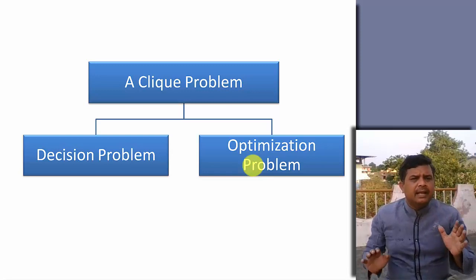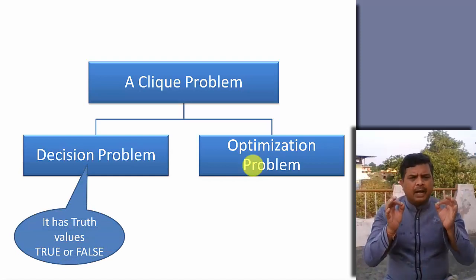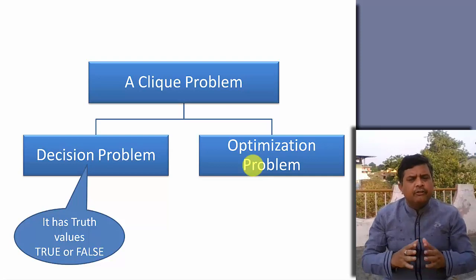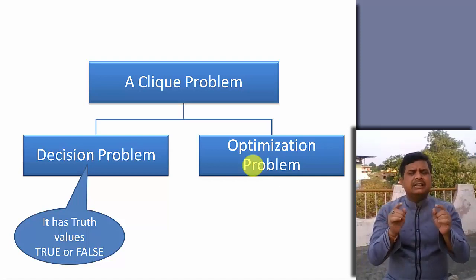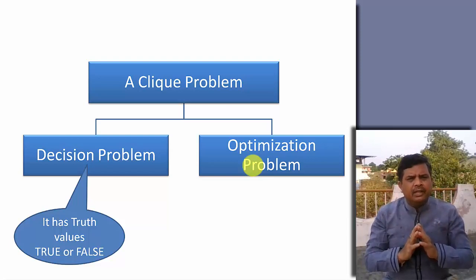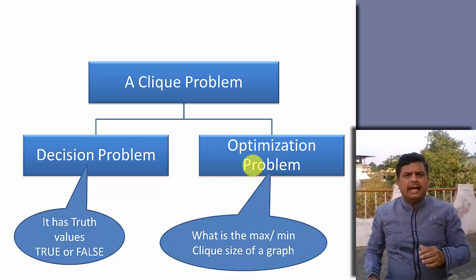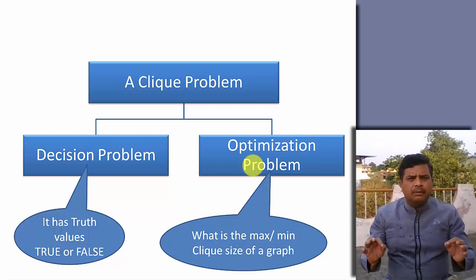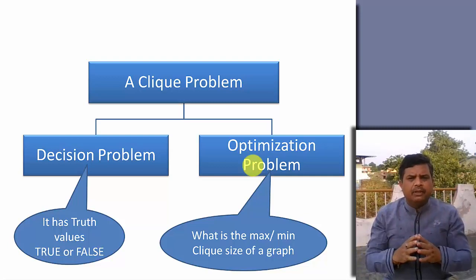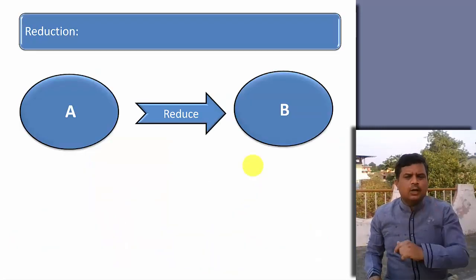A clique problem can be either a decision problem or an optimization problem. When the problem is answered in the form of true or false, it is a decision problem. For example, given a graph, is there any clique of size 2 or is there any clique of size 3? If the question is answered in the form of true or false, then this is a decision problem. The optimization problem is where the question is answered in the form of maximum or minimum, like what is the maximum or minimum clique size of a particular graph.